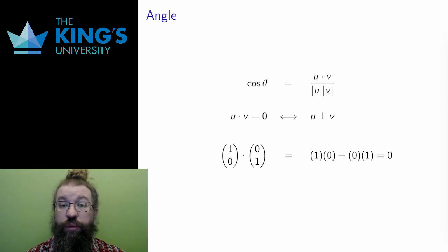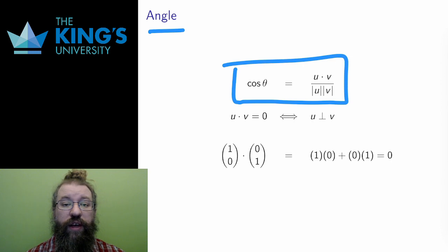First, the dot product is related to the angle between two vectors. Specifically, the cosine of the angle between two vectors is equal to the dot product of the vectors divided by the length of each vector. Of course, in this equality, the vectors cannot have length 0, since that would lead to division by 0. However, that makes sense, since the 0 vector doesn't point anywhere, and therefore can't be used to define any angles.